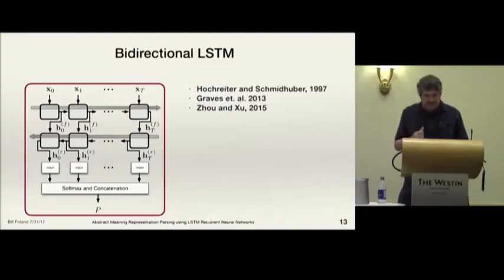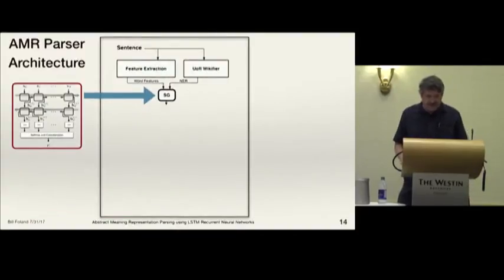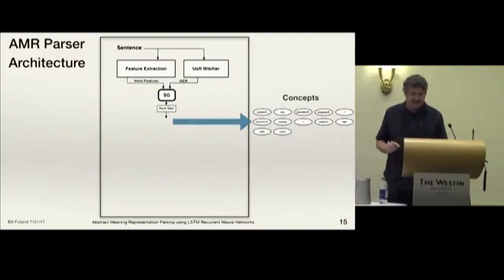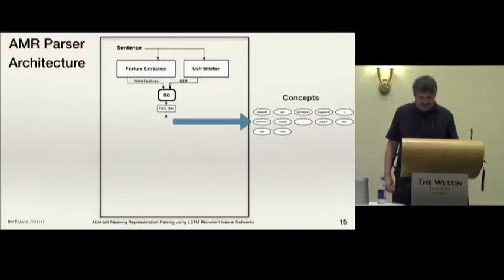The basic building block of our parser is a bi-directional LSTM, which is really great for sequences that identifies long distance relationships necessary for semantic extraction. The first bi-directional neural network in our parser is called the subgraph network. It takes as input word features and the named entity from the U of I wikifier, which we use, and produces a set of probabilities associated with the subgraph tags. Then we choose the most likely of those and we infer the concepts.